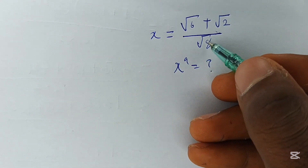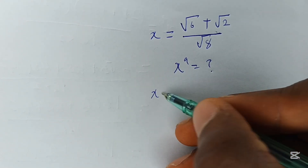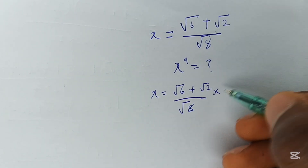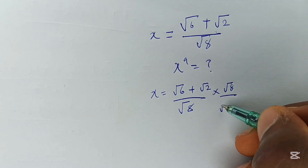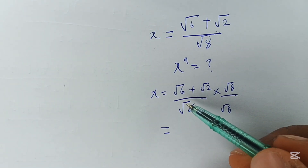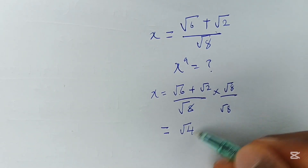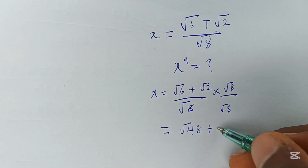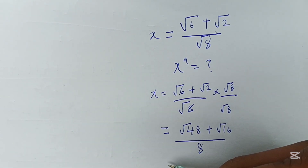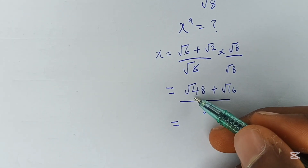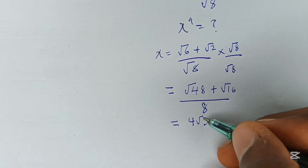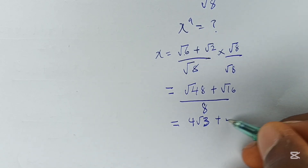Let's rationalize the denominator. x equals (√6 + √2)/√8. Multiply by √8/√8. The numerator becomes √6 × √8 = √48, plus √2 × √8 = √16, all over 8. So we get (√48 + √16)/8, which simplifies to (4√3 + 4)/8.